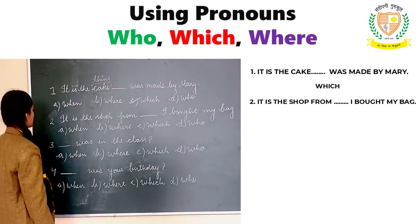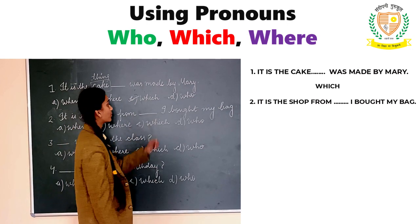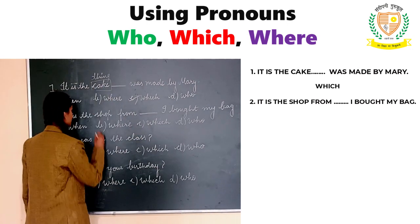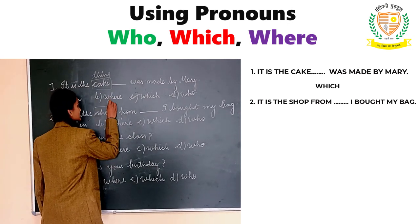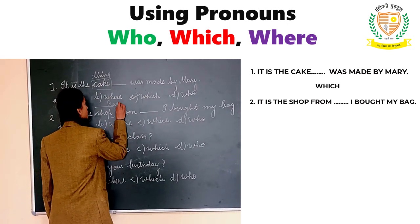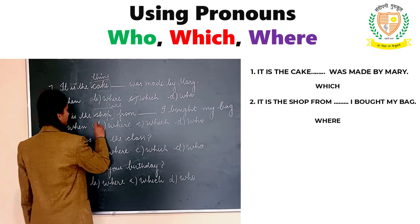Second example: it is the shop from where I bought my bag. Shop is a place, so with a place we use where.